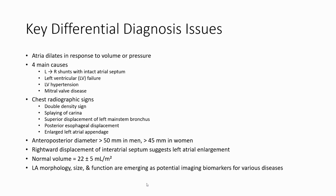On echocardiography, if we see the rightward displacement of the interatrial septum, it suggests left atrial enlargement. The normal volume of the left atrium is 22 plus or minus 5 ml per square meter. Left atrial morphology, size, and function on imaging have potential as a biomarker for various diseases.